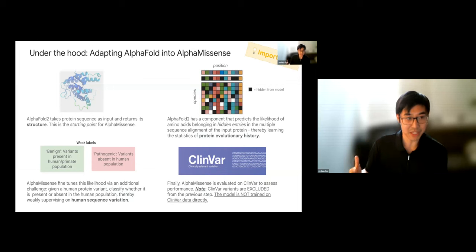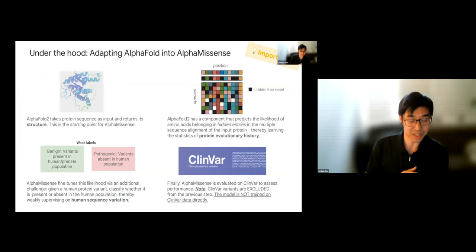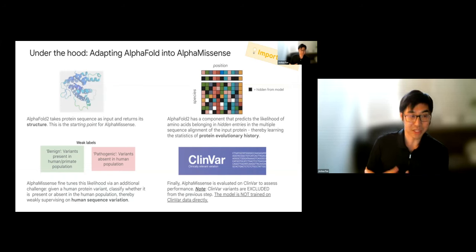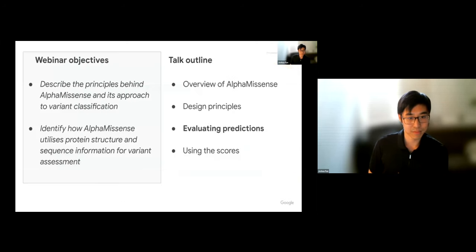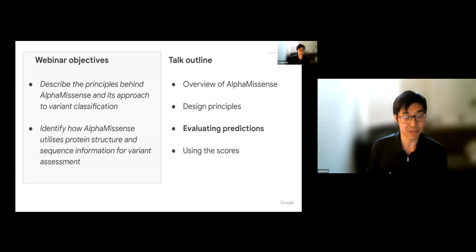After these three training stages are complete and the inductive biases introduced, evaluation occurs by grading the model against ClinVar. It's important to note that variants present in ClinVar were excluded from training — the model is not trained on ClinVar data directly, only evaluated on it. Let's move on into evaluation and understanding how these predictions hold up against different sources of ground truth.